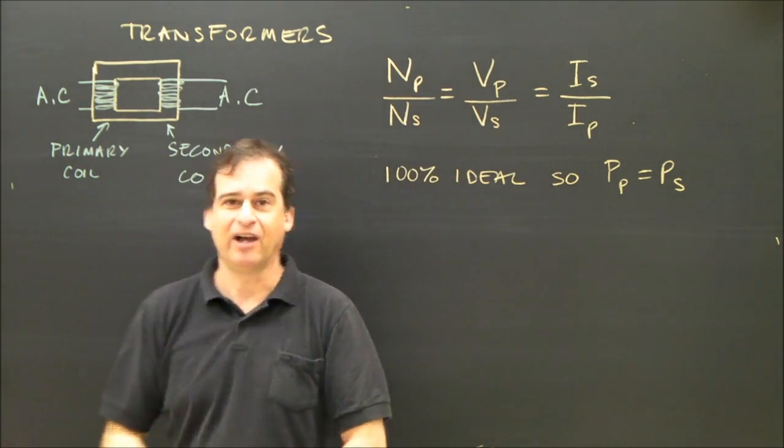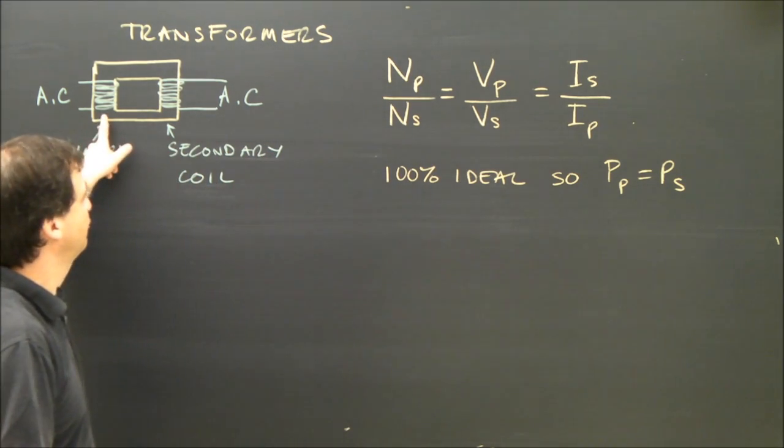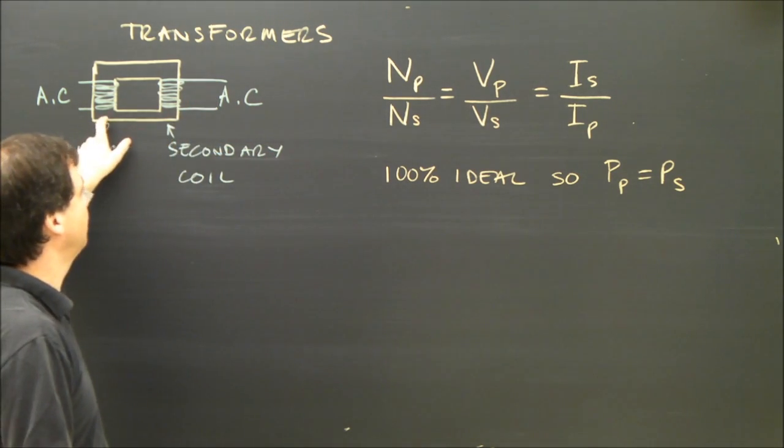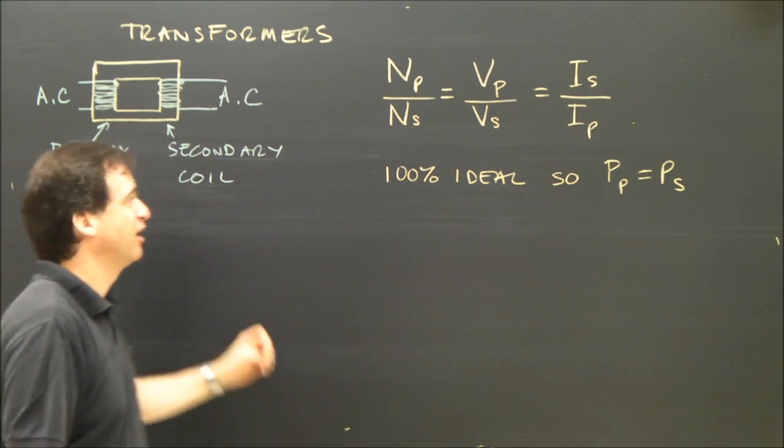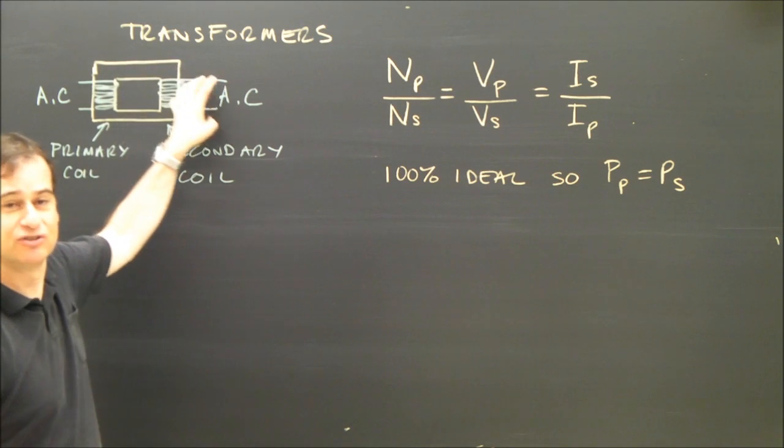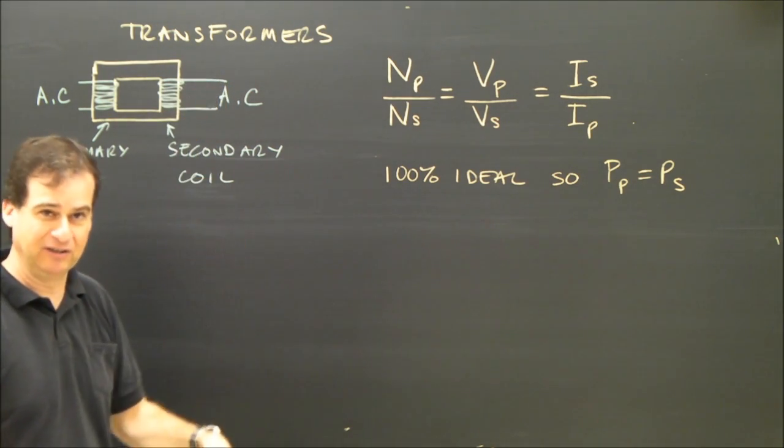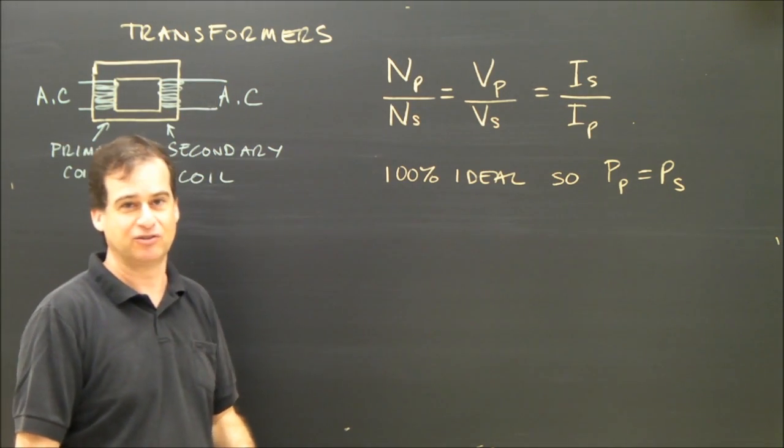So here's my transformer. I can change the voltage from 100 volts to 200 volts or from 10 volts to 20 volts. That's called a step-up transformer. I can also have a transformer that takes 100 volts, turns it into 50 volts. So I'm going lower, so that's a step-down transformer.